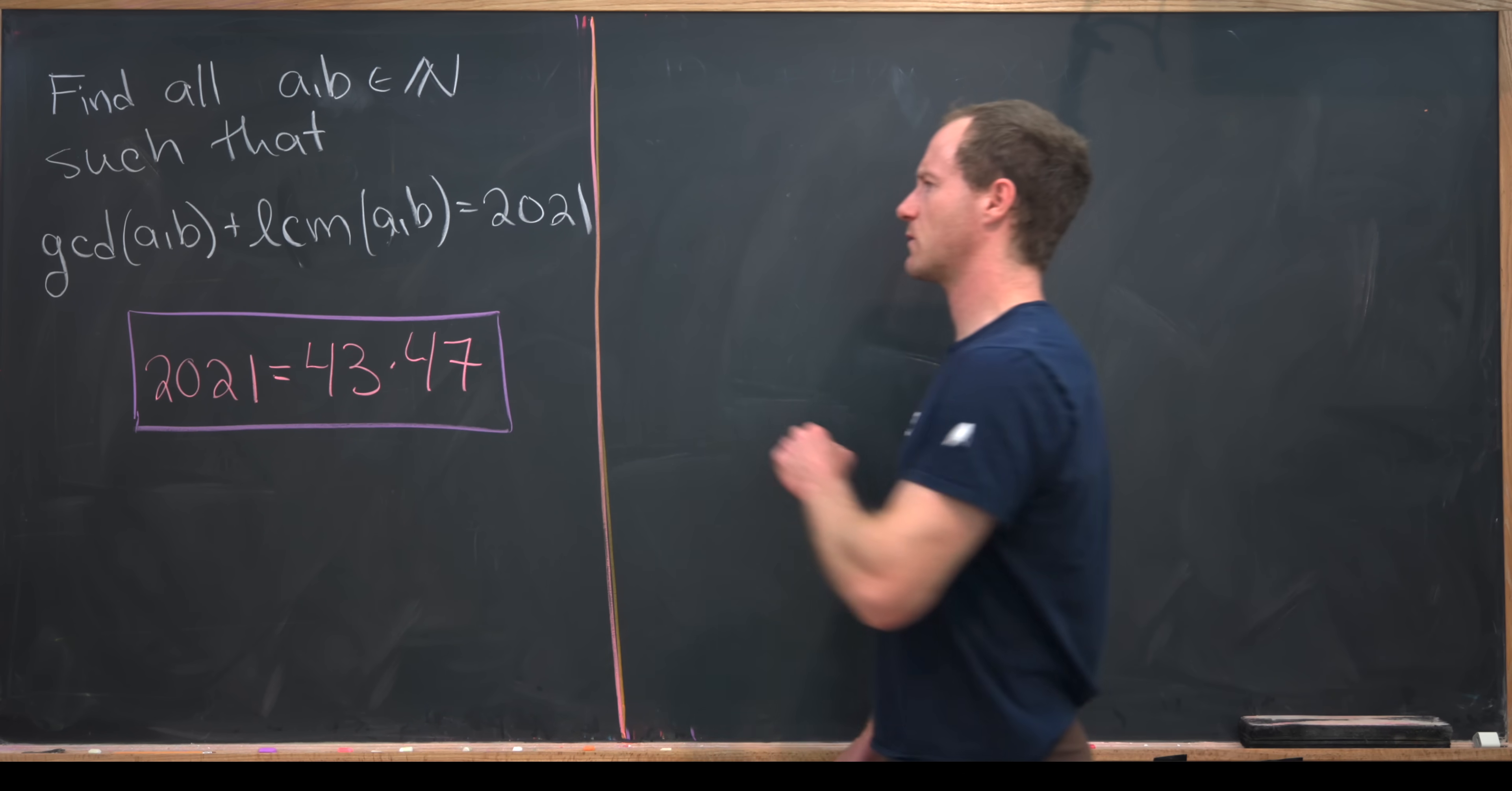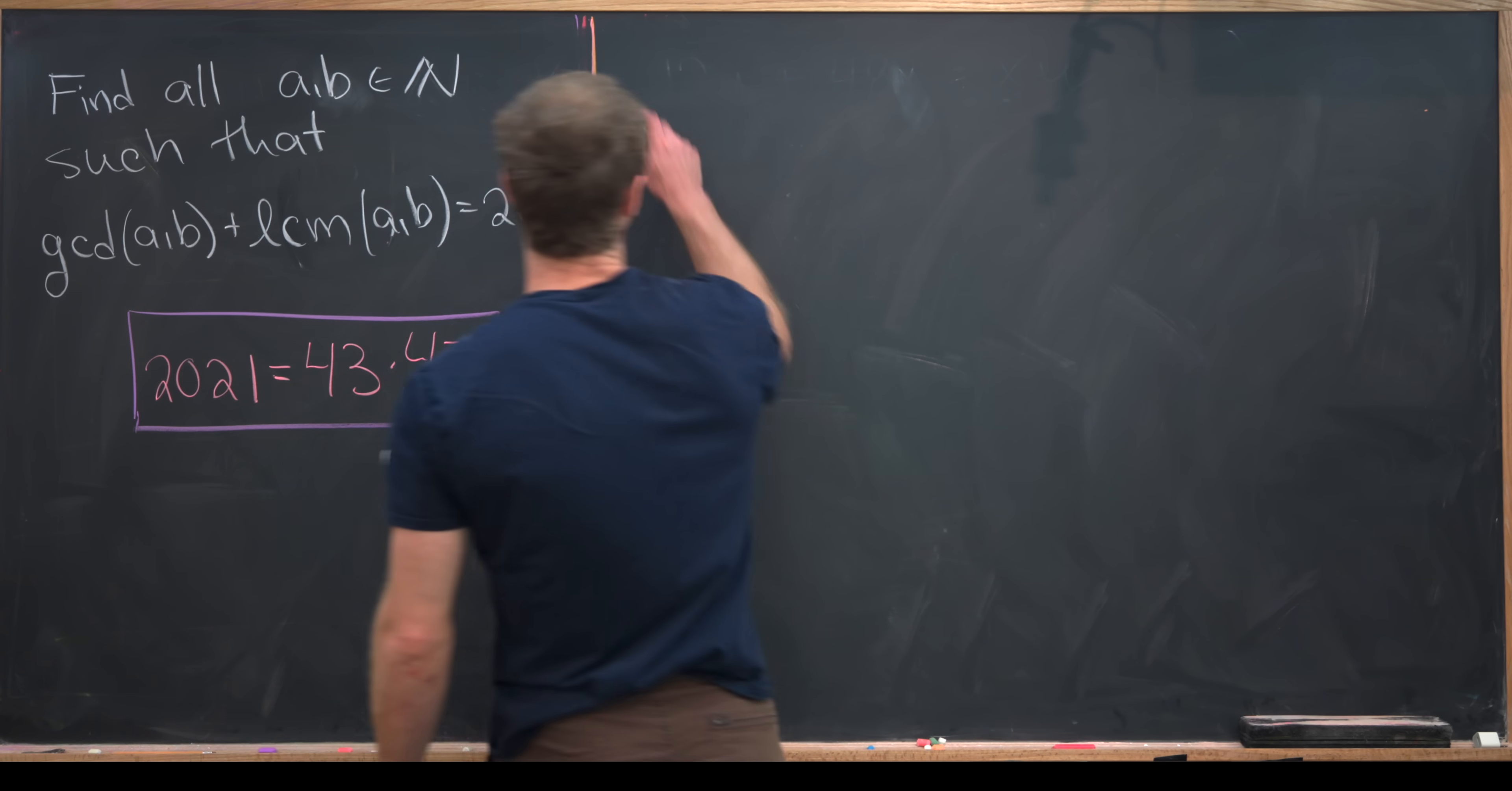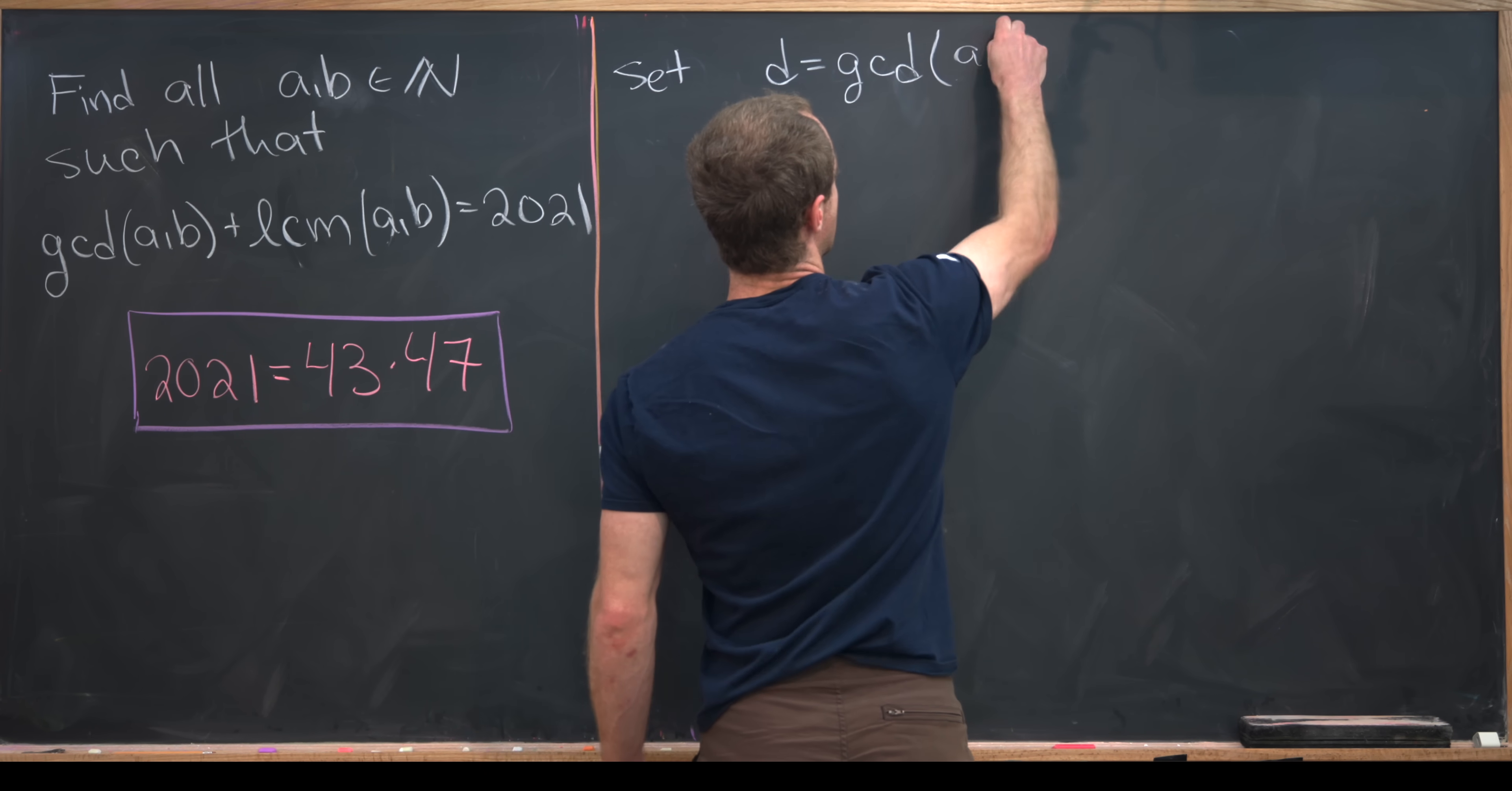First off, I want to simplify this a little bit by setting the GCD of A and B equal to something. Let's call it D. So let's set D equal to the greatest common divisor of A and B.